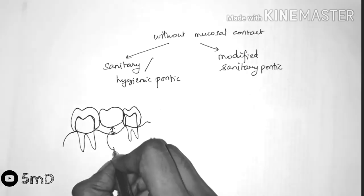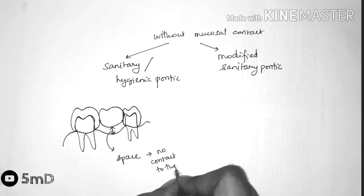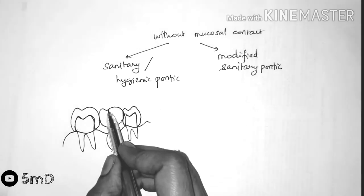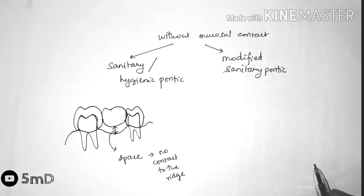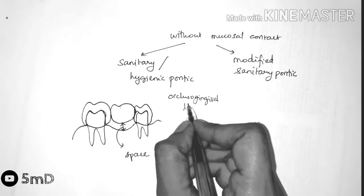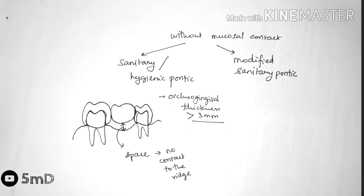The occluso-gingival thickness of the pontic should be greater than 3mm for enough support. Design of the pontic is such that it resembles a fish belly. It is convex both mesiodistally and also facial lingually.